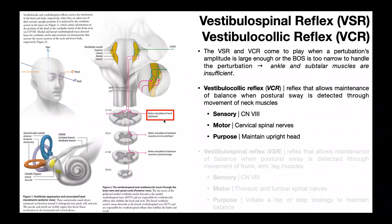The purpose is to maintain an upright head. So if your head bends too far forward, your neck extensors are made to activate. If your neck bends too far back, your neck flexors will activate. The whole goal is keeping your head upright so you can see your surroundings.